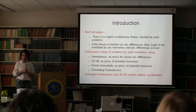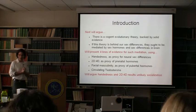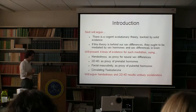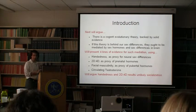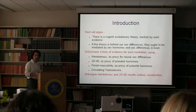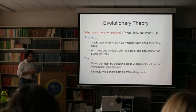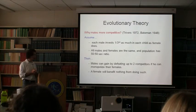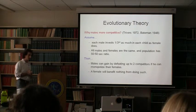Does anybody have questions at this point? Feel free to ask — I'm used to being bombarded with questions in the middle, so if there's something you don't understand, please ask. So very briefly, the evolutionary theory — this dates back to Trivers and Bateman and many others since. It's been very well developed, and the details are still being argued over.